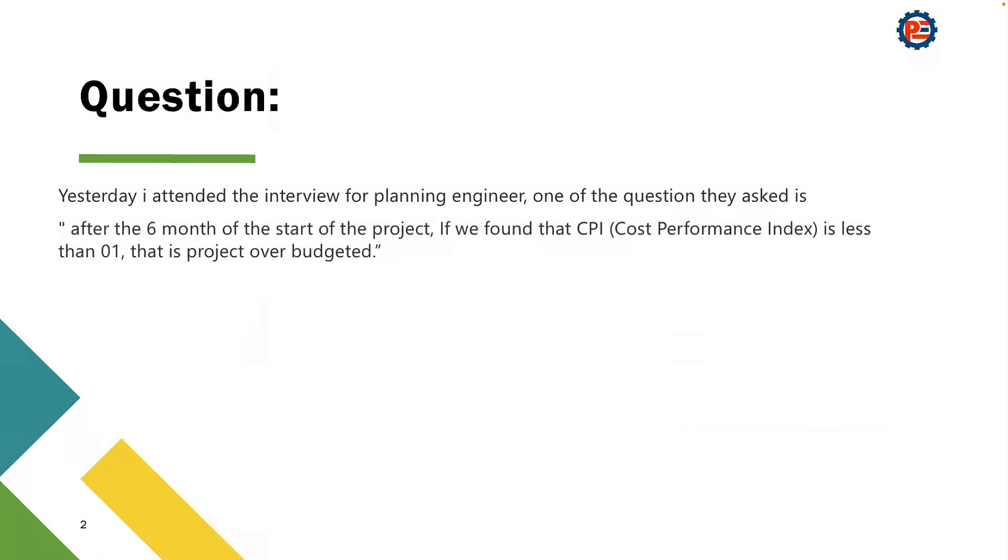after the six months of the start of the project, if we found that the CPI or Cost Performance Index is less than one, this is a project over budget. The question: what is the possible reason behind it and how can we correct it?